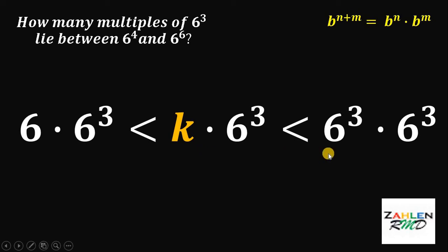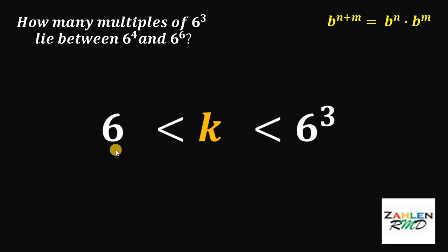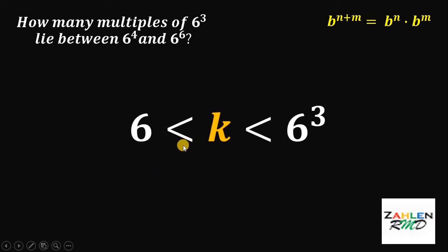If we divide these numbers by a positive number, the inequality symbol doesn't change. Let's divide those numbers by 6 raised to 3. We can now cancel out a factor of 6 raised to 3. And what we have now is k must be greater than 6 but less than 6 cube.